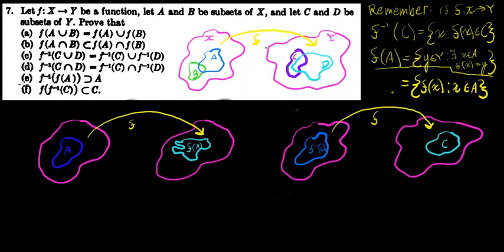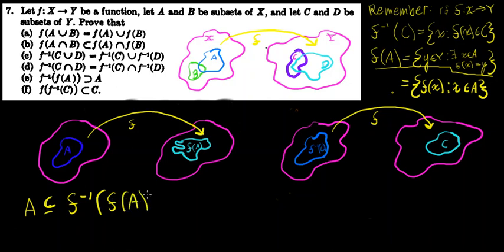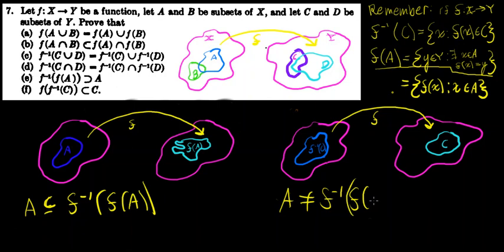In this problem, we're showing not a set equality, but we're showing that A is a subset of the inverse image of the image of A under f. We're showing that A is a subset of f⁻¹(f(A)). And in this video, I'm also going to show why A is not equal to f⁻¹(f(A)).